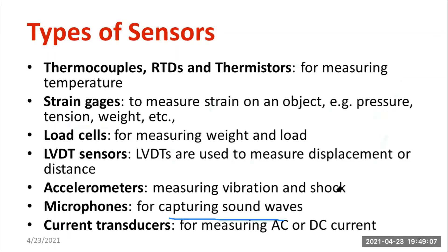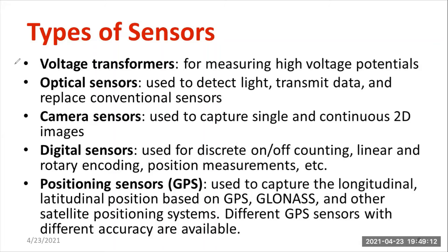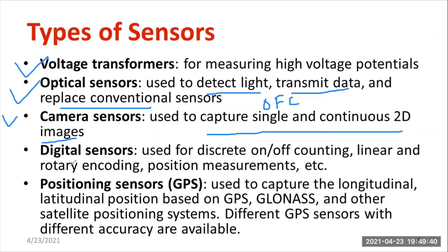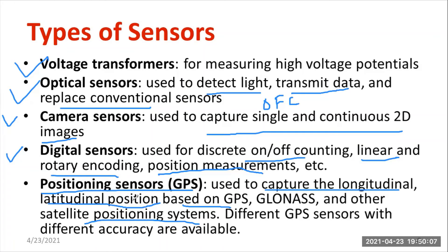A voltage transformer measures voltage. Optical sensors detect the presence of light, transmit data, and replace conventional sensors; they are mainly used for optical fiber cable (OFC) communication and operate based on total internal reflection. Cameras rely on sensors — without sensors we cannot operate digital cameras; they capture continuous 2D images and are used for image processing. Digital sensors are used for discrete on/off counting, linear encoding, and position control. GPS sensors capture longitudinal and latitudinal position; different GPS sensors with different accuracy ranges are available today.